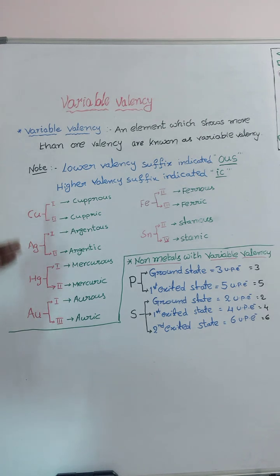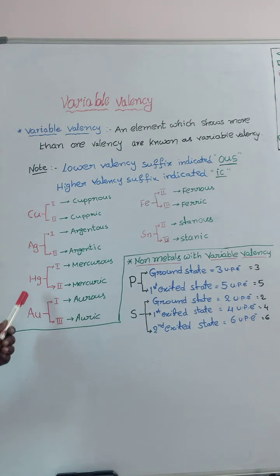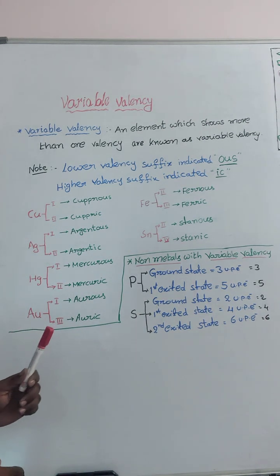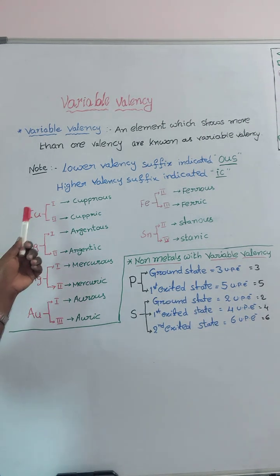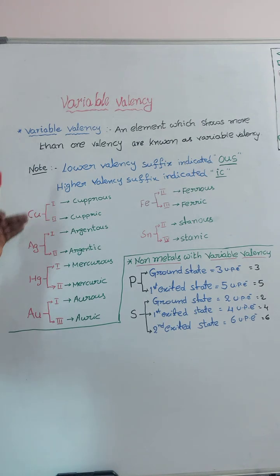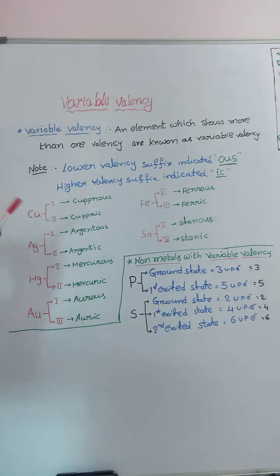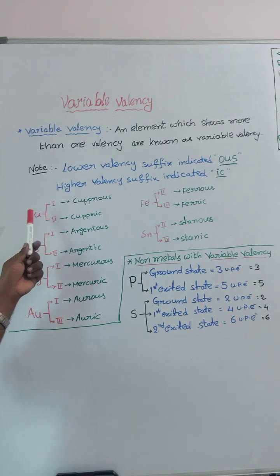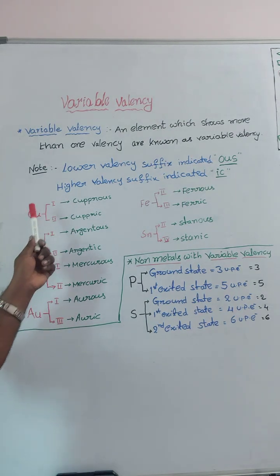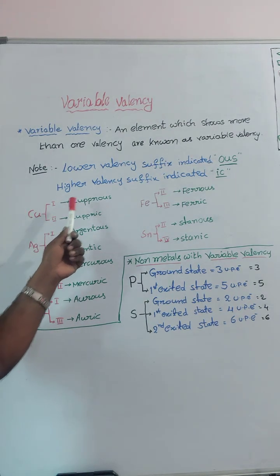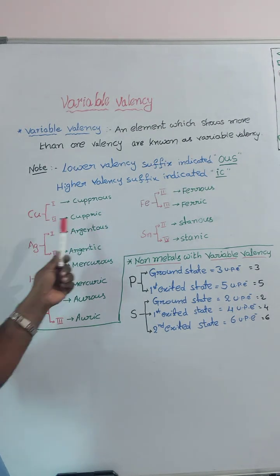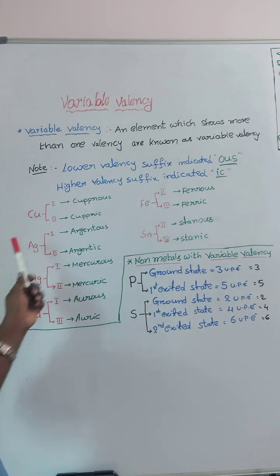See here, different elements. Copper, Silver, Mercury, Gold — these four also exhibit variable valency of 1 and 2. So, easy to remember, I've given them in the same order. Copper: lower valency is cuprous, higher valency is cupric.